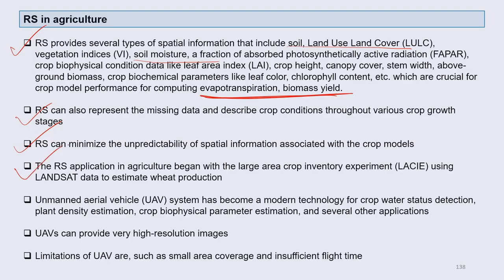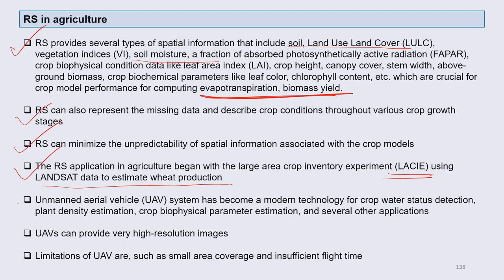Remote sensing applications in agriculture began with the Large Area Crop Inventory Experiment, which we call LACIE. LACIE used Landsat data to estimate crop production, especially in developed countries where huge amounts of land are covered under a single crop — giving very useful remote sensing information. In India, where land sizes are small and two different crops may be in adjacent fields, remote sensing can still help us understand crop coverage in an area.